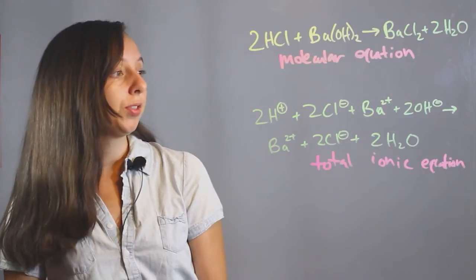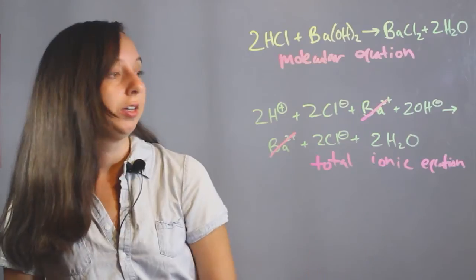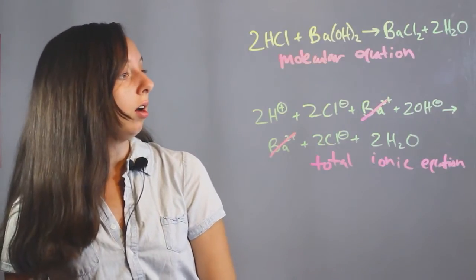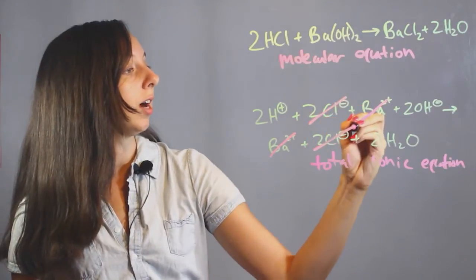So, on both sides, we have our barium, cross this out, didn't react. And on both sides, we also have these two chloride ions, they didn't do anything either, so they're crossed out.